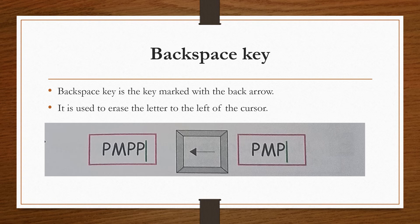You can see here P M P P, and then you can see the cursor line over here. So what this backspace key will do when we press it? It will remove the capital P which is on the left side of the cursor. Now we are left with P M P. So this is the use of backspace.